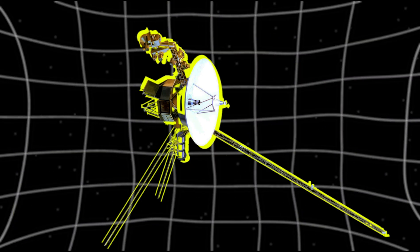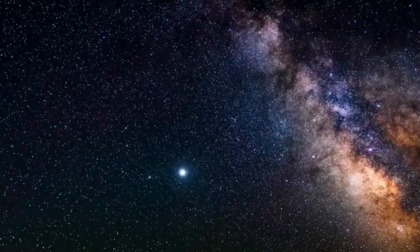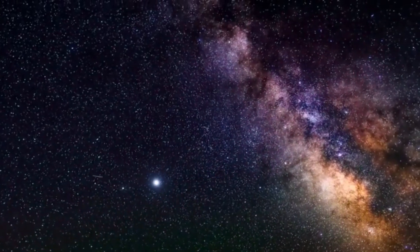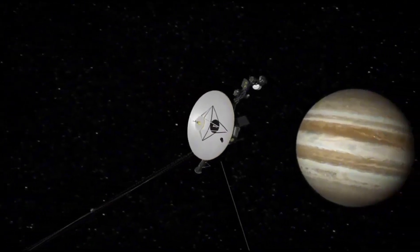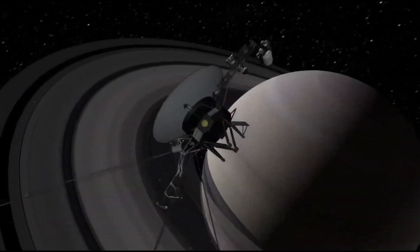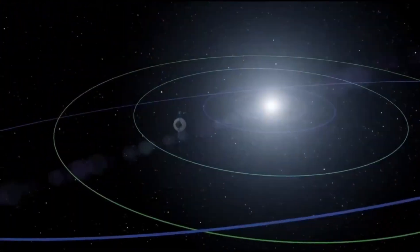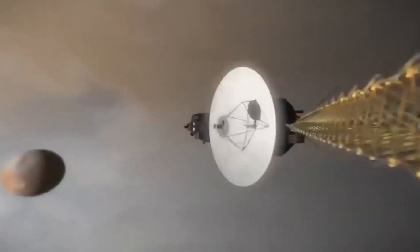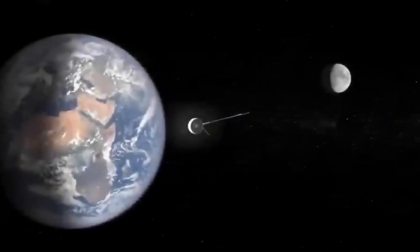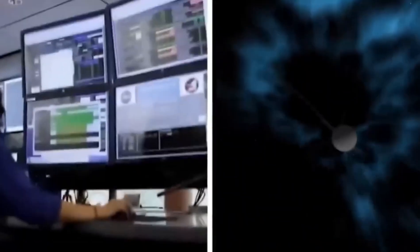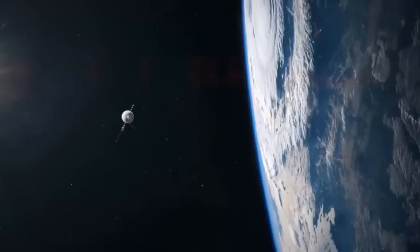When Voyager 1 passed Pioneer 10 on February 17, 1998, at a distance of 69 AU from the sun, it took the title of the most distant human-made object in existence. On December 16, 2004, the scientists working on Voyager 1 stated that at 940, Voyager 1 had recorded high magnetic field intensity readings, suggesting that it had hit the termination shock and was now in the heliosheath.